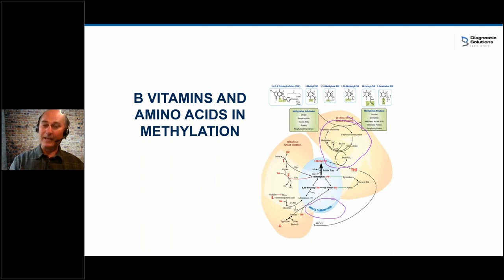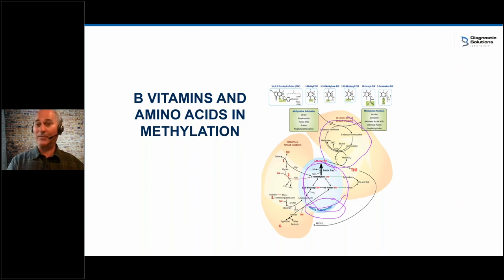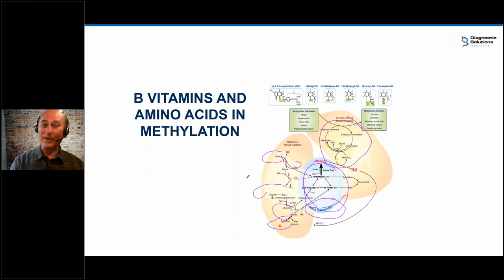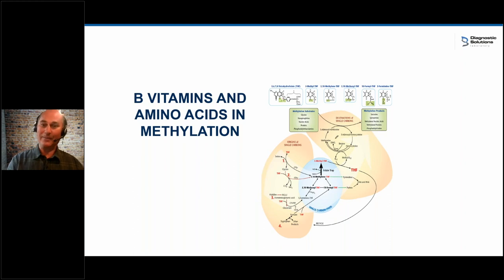Methylation is slinging carbons around, but the carbons have to come from somewhere or you can't methylate anything. Where do the carbons come from? They come from amino acids: serine, glycine, histidine, tryptophan, and glutamine — about four or five of them. So you need amino acids to grab carbons from in order to use B vitamins to methylate. It shows up over and over again: patient has a methylation problem — you talk about amino acids and B vitamins.